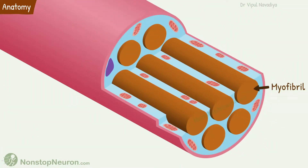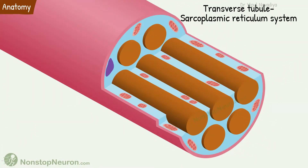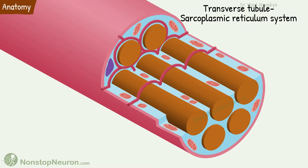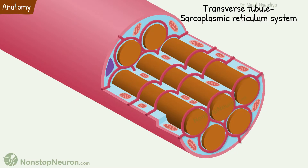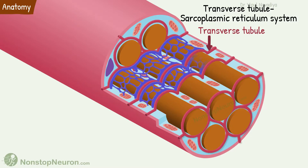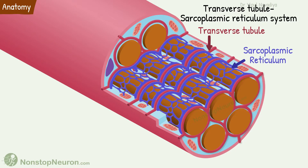Surrounding the myofibrils is the T-tubule sarcoplasmic reticulum system. T-tubules are invaginations of the plasma membrane. Sarcoplasmic reticulum is a special type of endoplasmic reticulum. This is a longitudinal cut section.